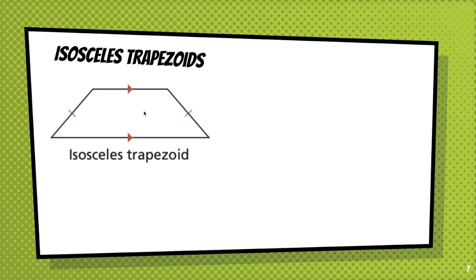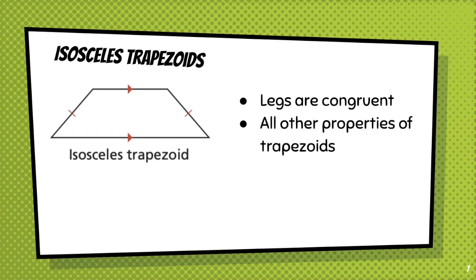Well, look at an isosceles trapezoid and you can see some similarities. This trapezoid has these two sides. These are the legs. The two legs are congruent to each other. Notice that the bases are not congruent. So the legs are congruent. All other properties of trapezoids still are retained.